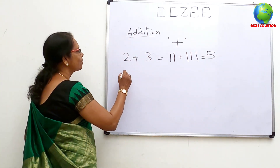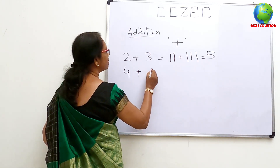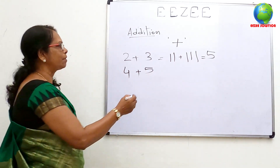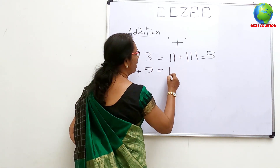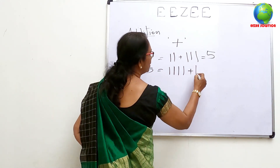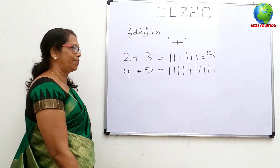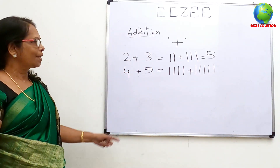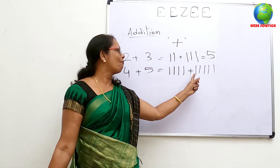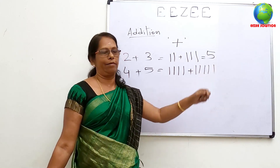We need 4 plus 5. We have to count on the number line: 1, 2, 3, 4 plus 5. We have to count on the number line: 1, 2, 3, 4, 5, 6, 7, 8, 9.